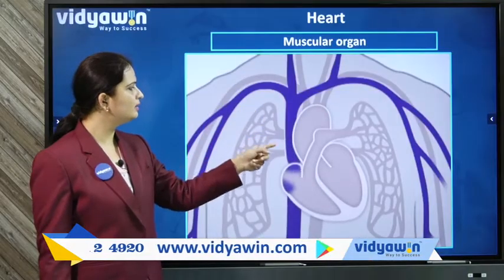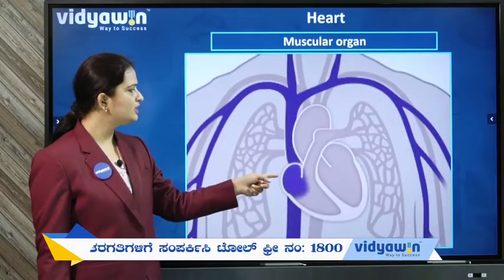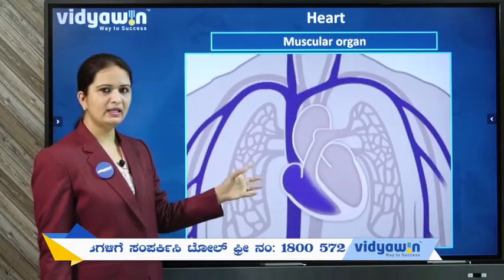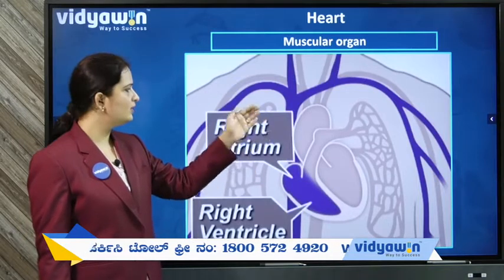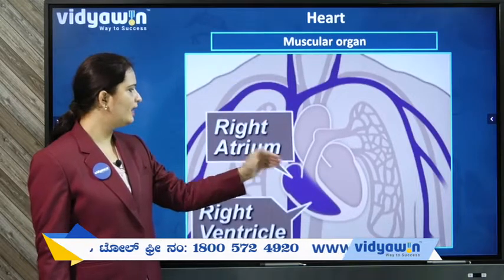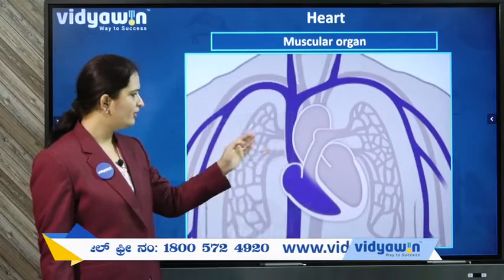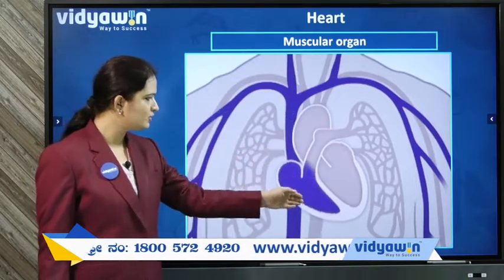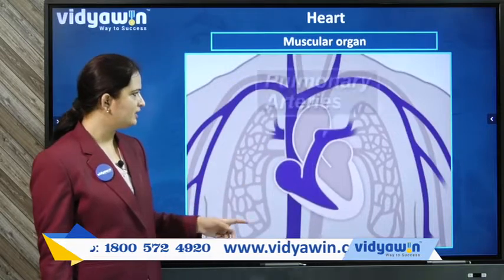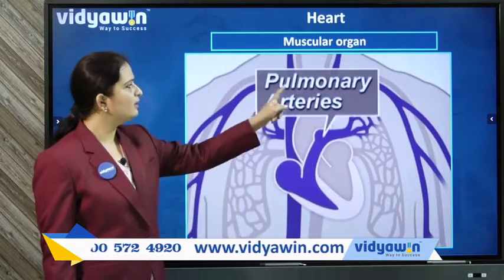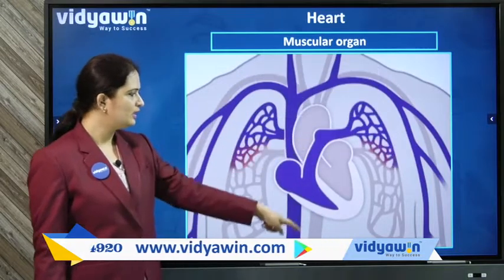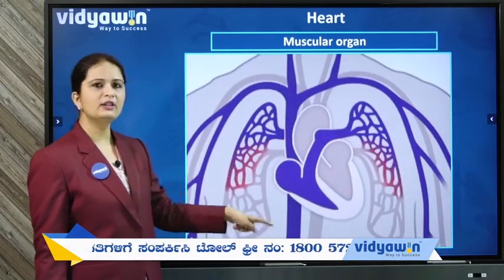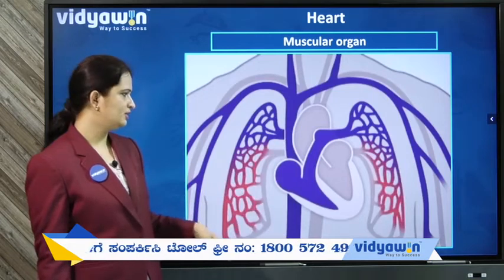This is depicting the deoxygenated blood that comes from various organs to the right atrium. From the right atrium it goes to the right ventricle, from which through the pulmonary arteries it goes to the lungs for further purification.